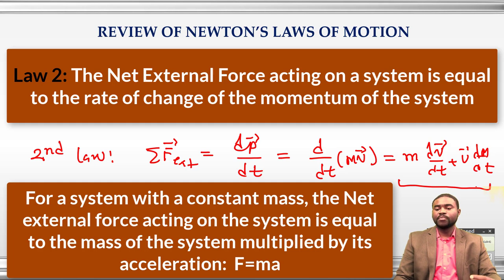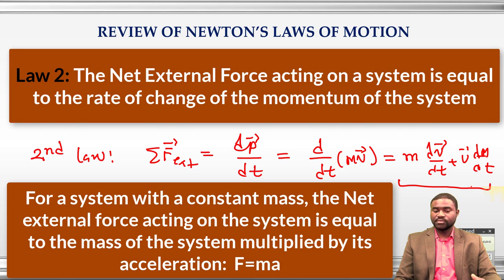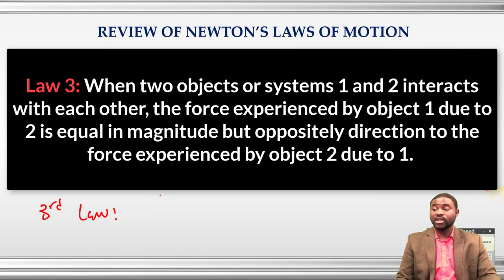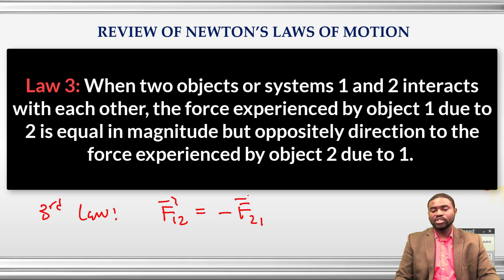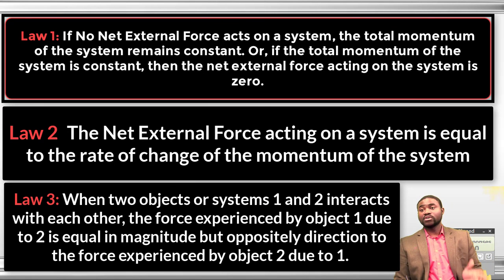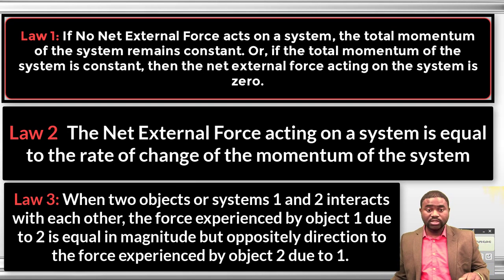This expression depends on whether the mass is constant or the velocity is constant. Law 3 basically states that when two objects, one and two, interact with each other, the force experienced by one due to the presence of two is equal to the force experienced by two due to the presence of one. They are equal but oppositely directed and are of the same kind. These are the three laws of motion, and on these three laws we have built a lot of concepts, and today we will continue with that discussion.